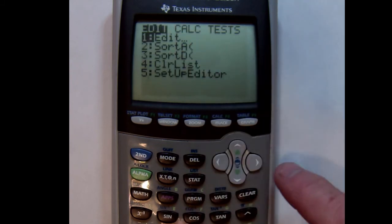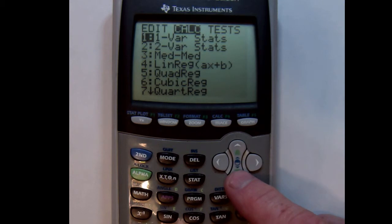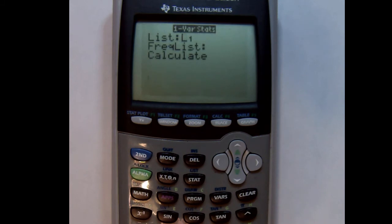And then I'm going to use the other list for Jill: zero, five, and ten. Then go back to the STAT key, and this time move over to CALC and we're using the very first one, one-variable statistics. So either hit enter or the number one.